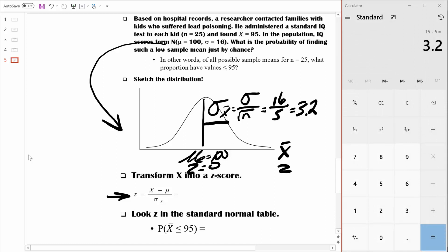So in other words, the sample means differ from 100 by about 3.2 points on average. Well, with that said, let's go ahead and transform 95 into a Z score.